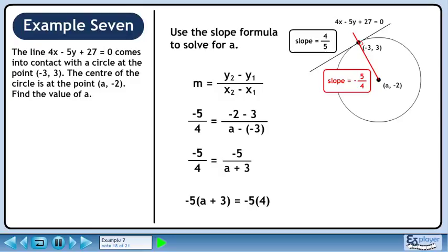Cross multiply. The -5s cancel out. This gives us a + 3 = 4.